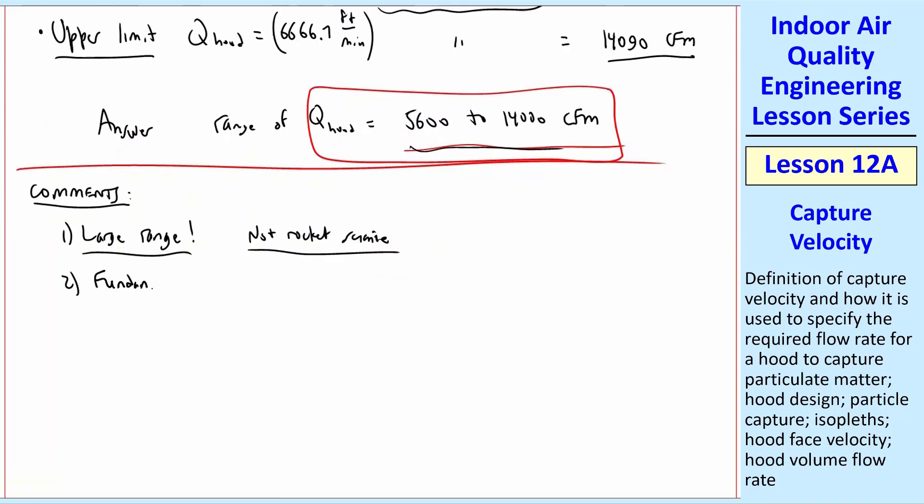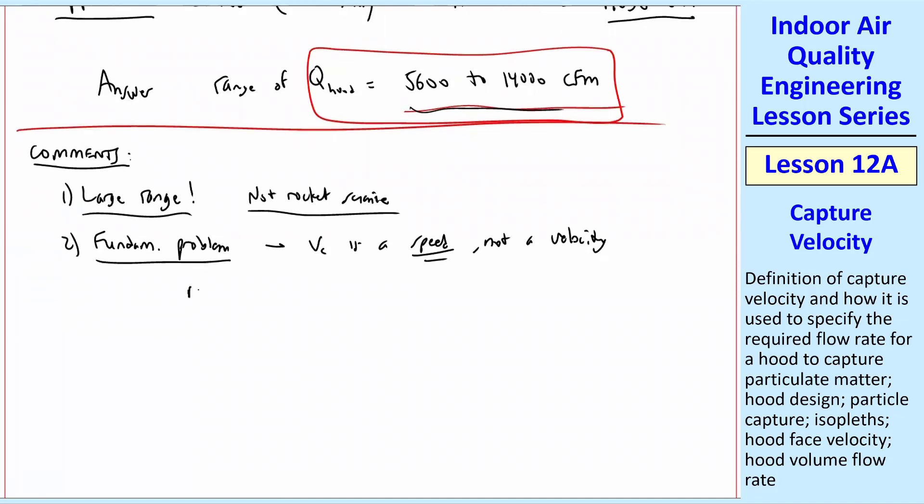Number two, there's a fundamental problem with capture velocity, namely that it's not really a velocity. VC is a speed, not a velocity. And I don't mean that the problem is just with the name. It's really not a good name. They should have called it capture speed. But it does not tell you anything about the direction, only the magnitude.